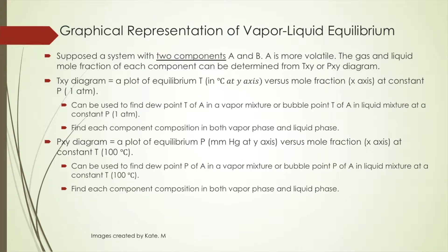In this section, we're going to talk about graphical representation of vapor-liquid equilibrium. Suppose a system with two components, A and B, where A is the more volatile species. The gas and liquid mole fraction of each component can be determined from a Txy or Pxy diagram. The Txy diagram is a plot of equilibrium temperature, usually in degrees Celsius, on the y-axis versus mole fraction on the x-axis at constant pressure, normally at 1 atm.